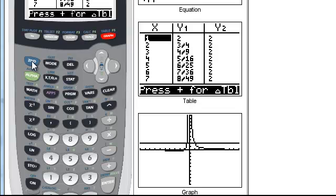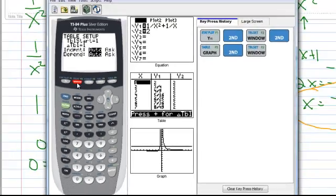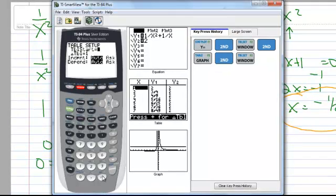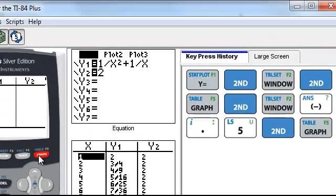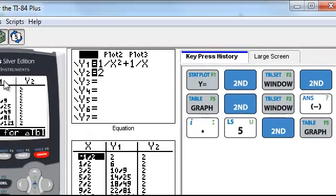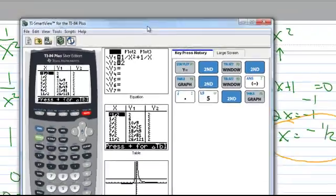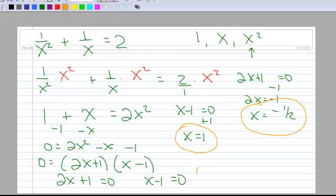And then the other one I was going to try is negative 1 half. So let's type in negative 1 half for 0.5. Let's go to table, and let's see if that's the solution, too. Sure enough, when x equals negative 1 half, both the left-hand side and the right-hand side match. So in this case, both of them are solutions.